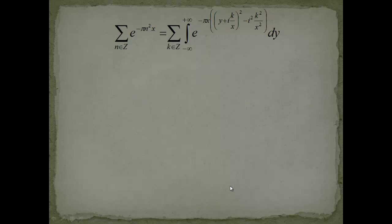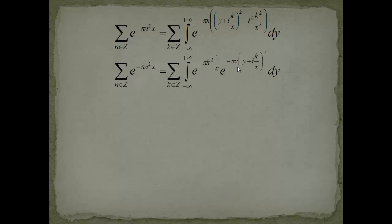Now I separate the integrand. The i-squared gives a minus-minus, so we're left with minus pi k-squared times 1 over x — the x and x-squared cancel to leave 1/x. This looks like it will produce theta of 1 over x, and it will indeed turn out to be the case. We also have e to the minus pi x times the square of (y + ik/x) in the remaining integral.